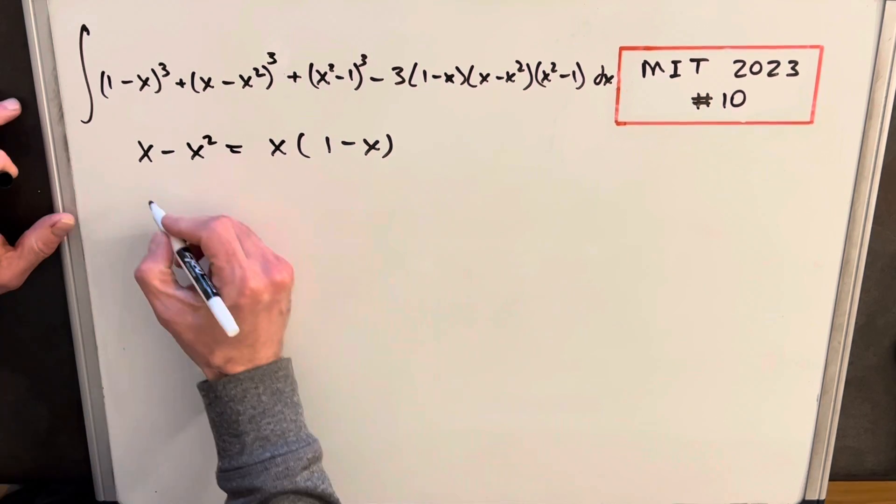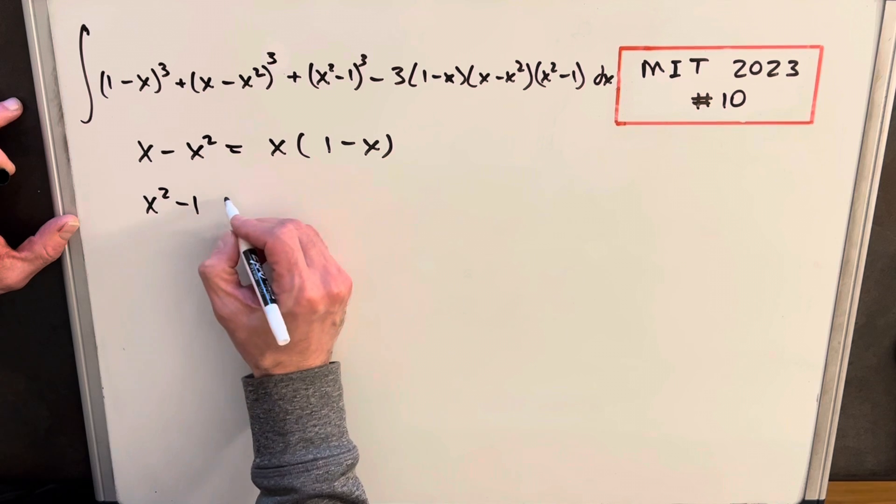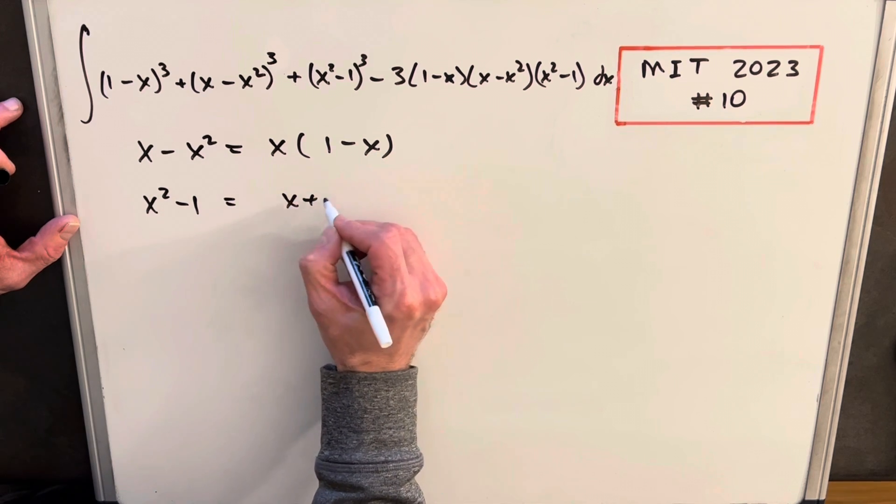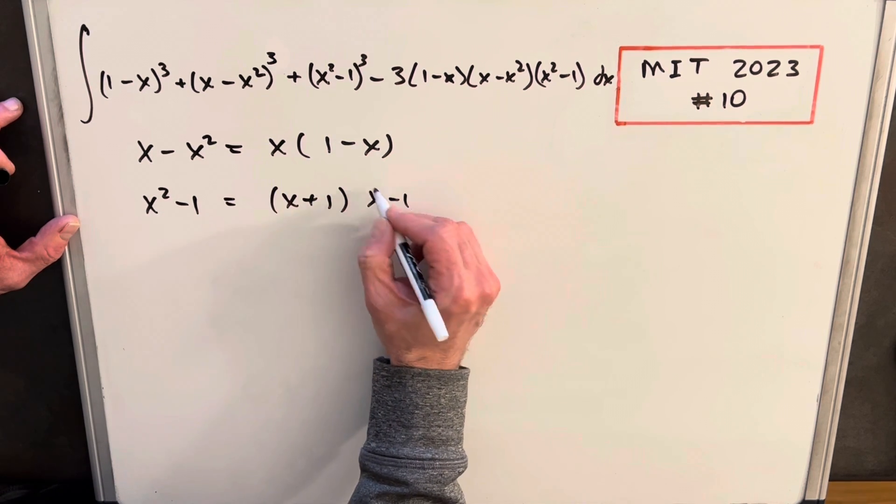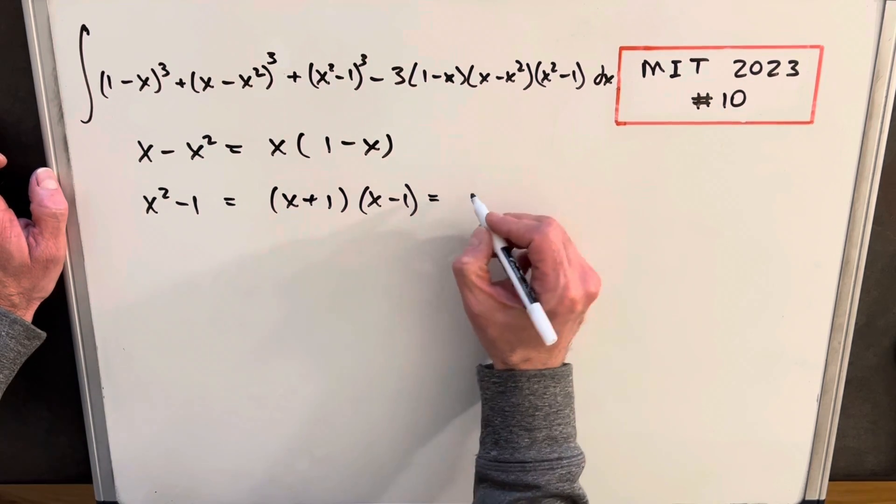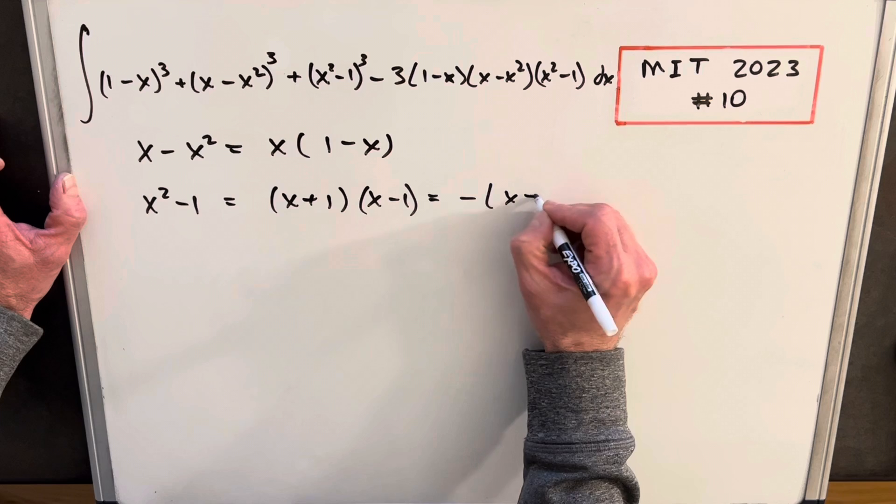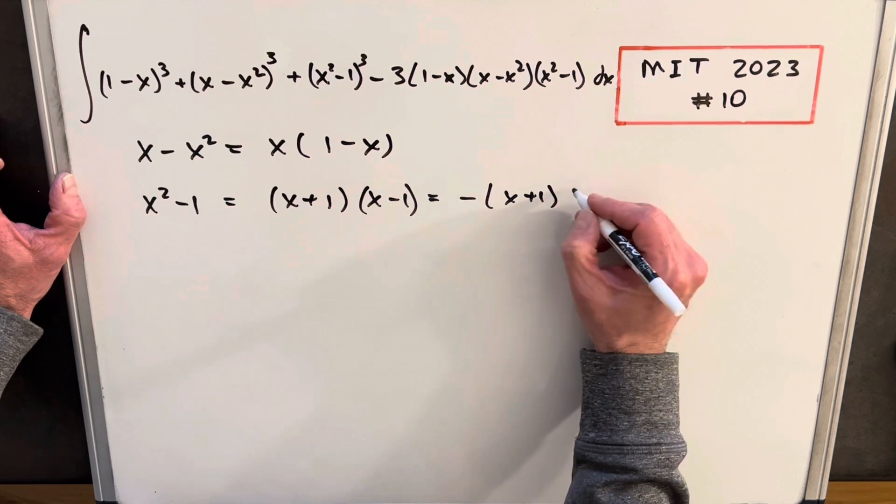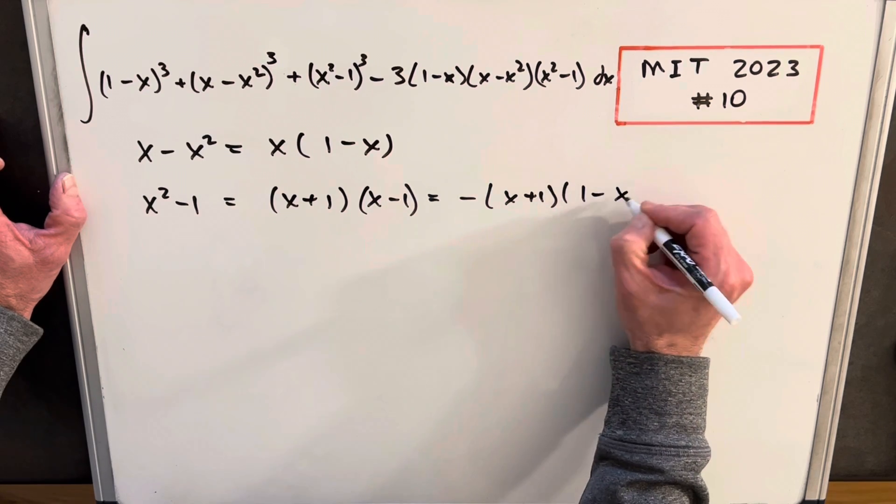But let's look at x squared minus 1. So that's just a difference of two squares. We can write this as x plus 1 times x minus 1. But then it's clear we can get a 1 minus x out of here just by bringing a minus out front. So if I write this as minus x plus 1, then I can flip the x minus 1 and write it as 1 minus x.